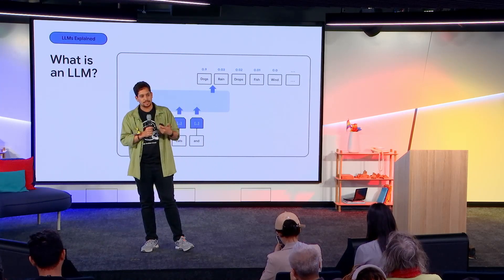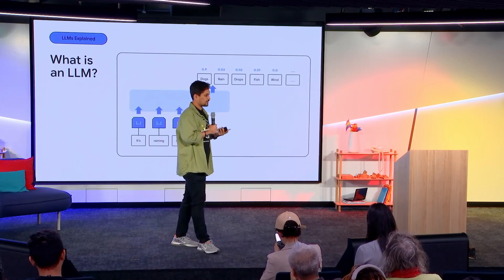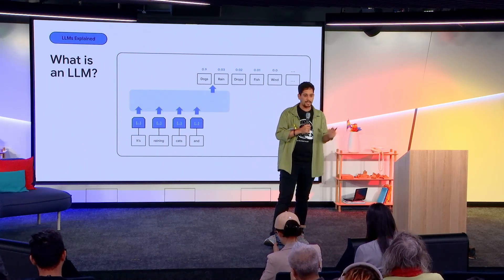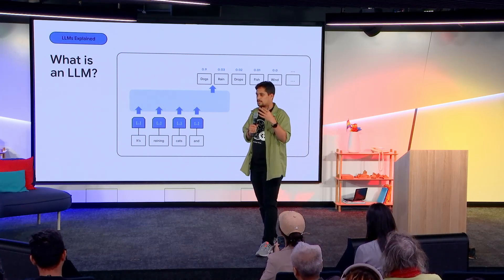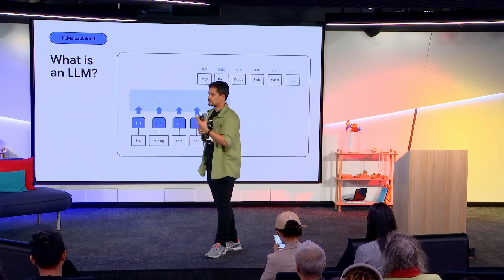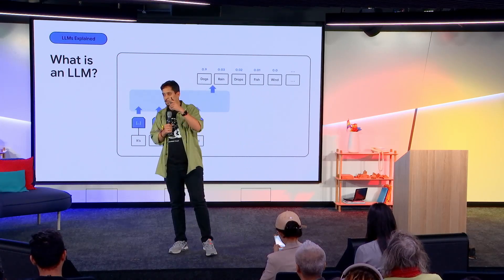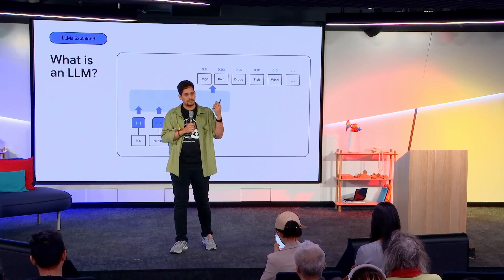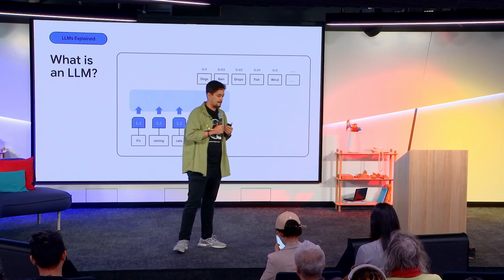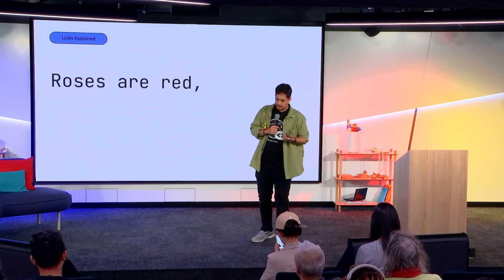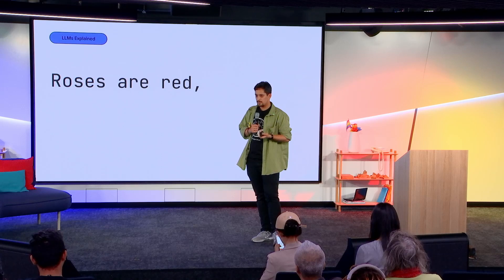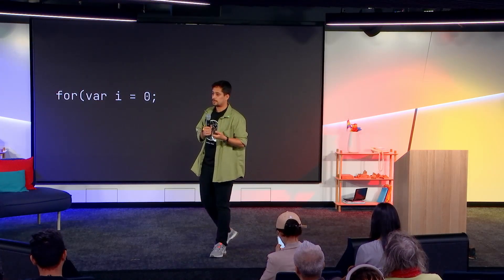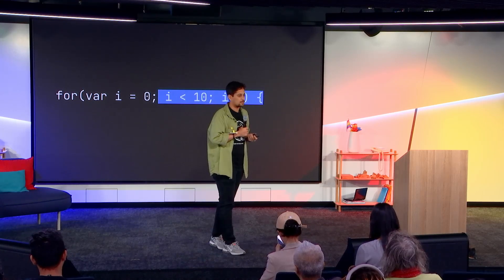An LLM is a neural network that models the distribution of text on which it is trained. For example, it can take an input like 'it's raining cats and dogs,' and then it puts weights on what are the next possible words in that sentence and picks the one with the highest weight. So if you think about it, it is a very sophisticated autocomplete. A model trained on poetry will give you a poetic answer; if trained on code, your result will be code in nature. That's just how LLMs work.